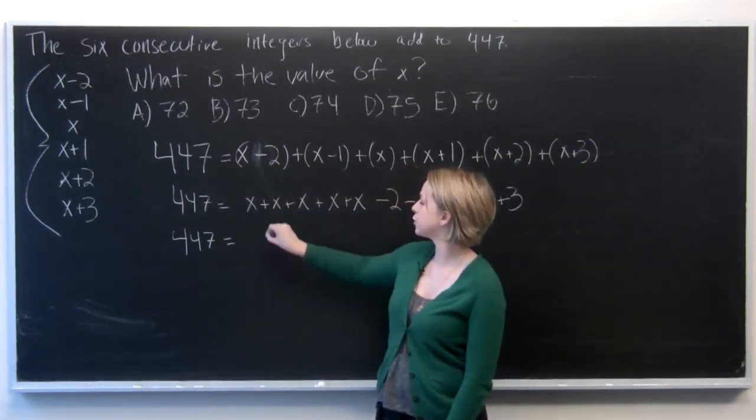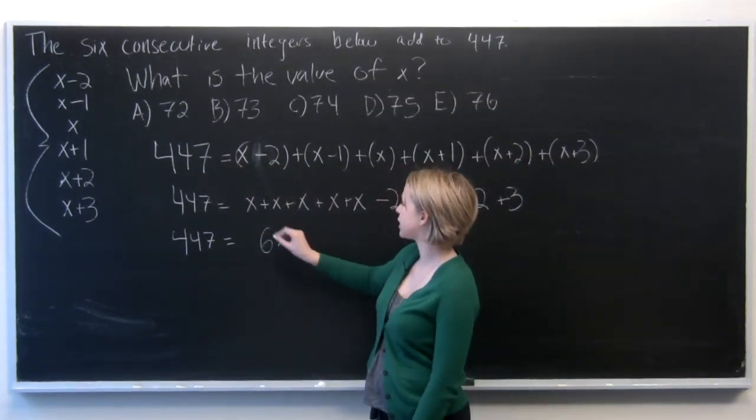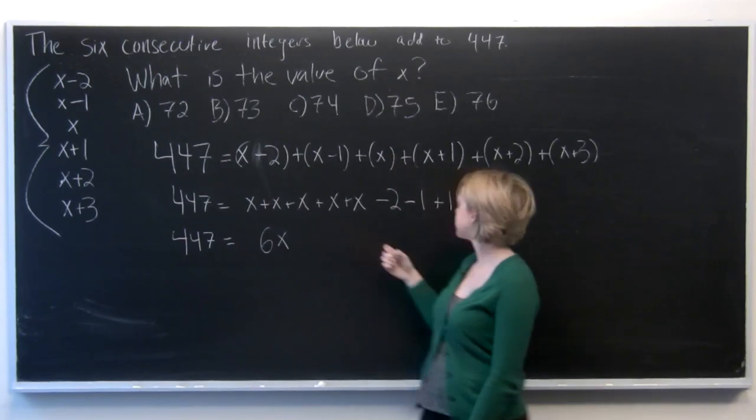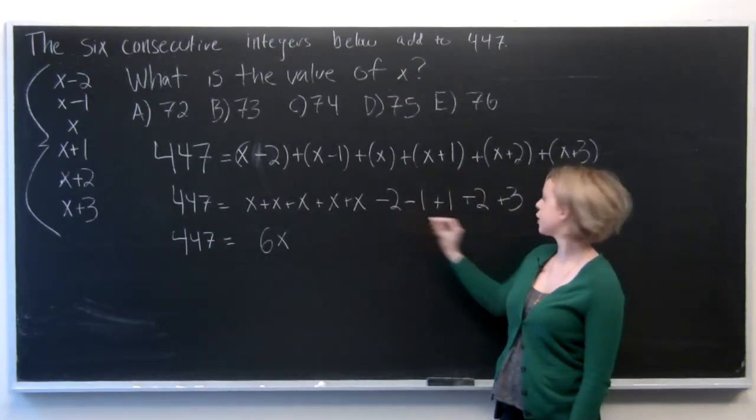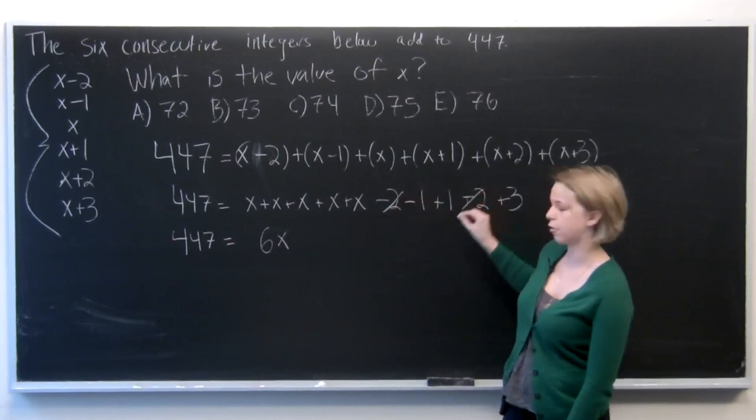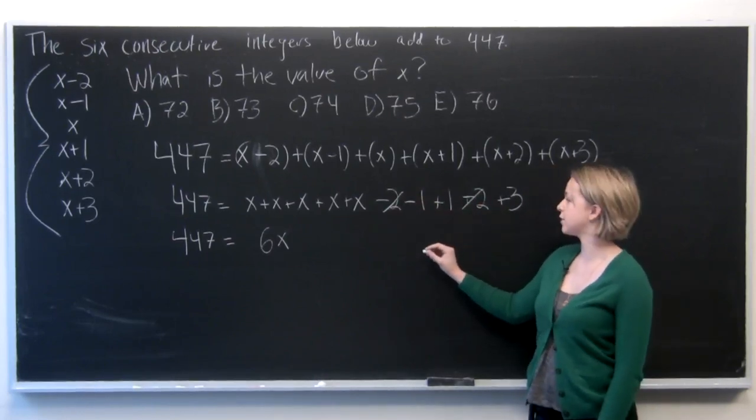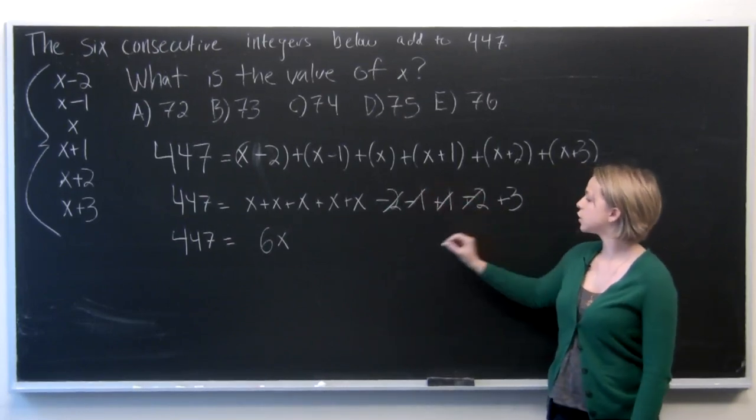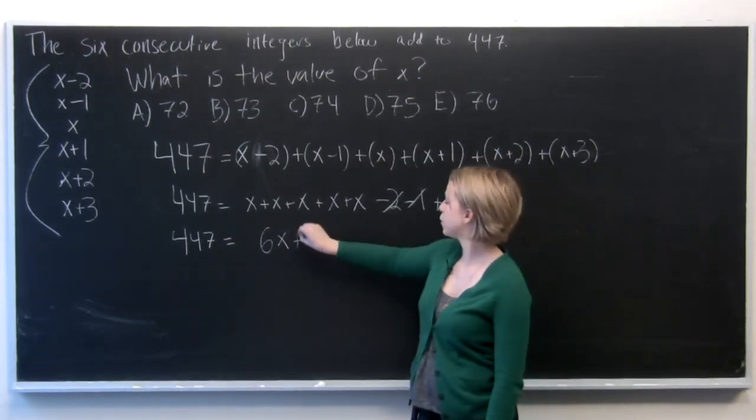So we set 447 equal to 6 times x because we have 6x values. The negative 2 and positive 2 add to 0 so we can just cross those out. And the negative 1 and positive 1 add to 0 again. So what we're left with is 6x plus 3.